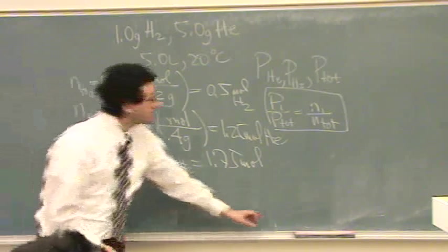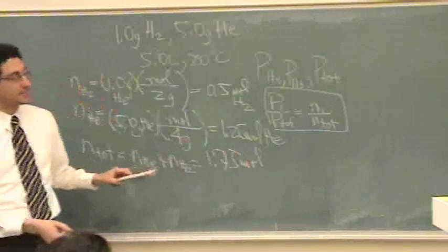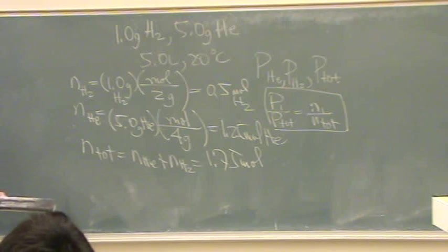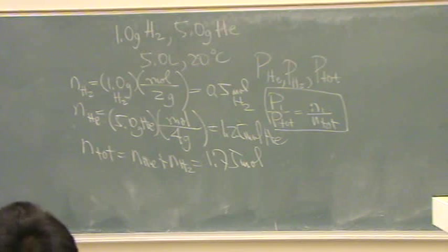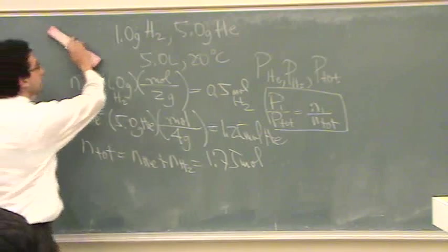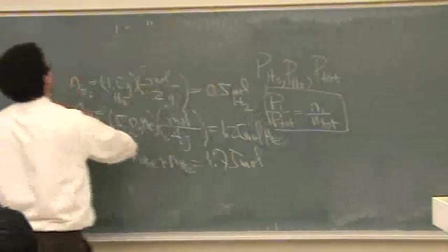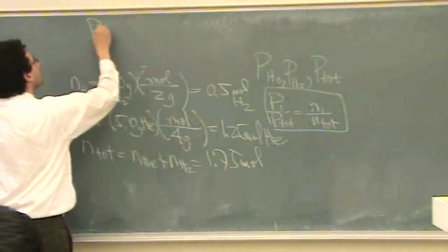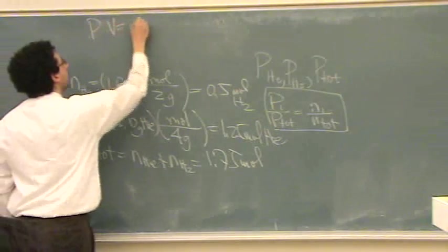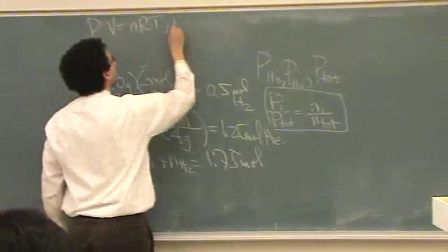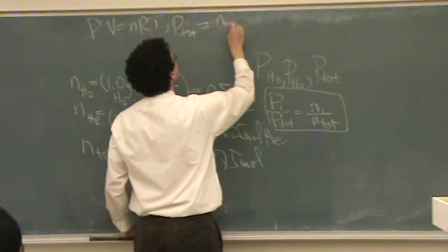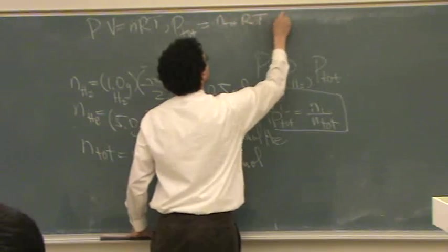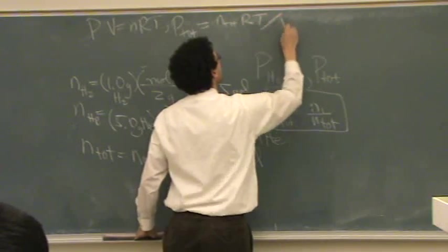So, my next step is, I think the next easiest thing to tackle is the total pressure. Total pressure, we should have enough information to use ideal gas law. So, ideal gas law, if I write that down, PV equals nRT, or, I want to find the total pressure, is the total moles times R times T, divided by the total volume.